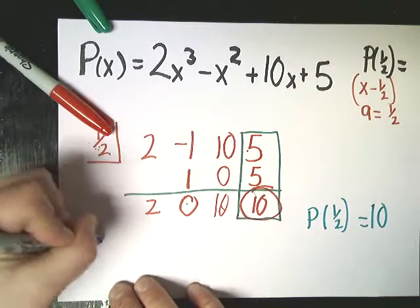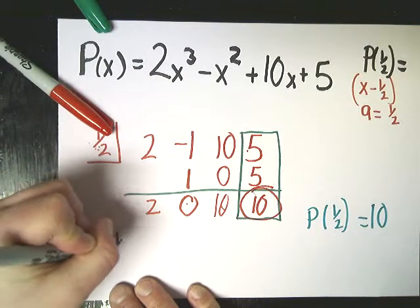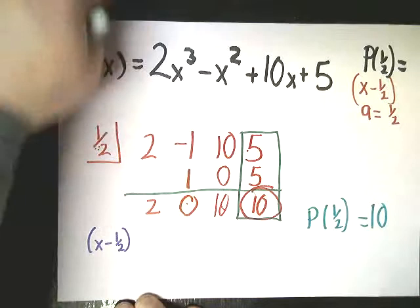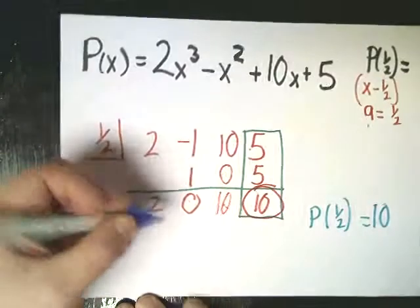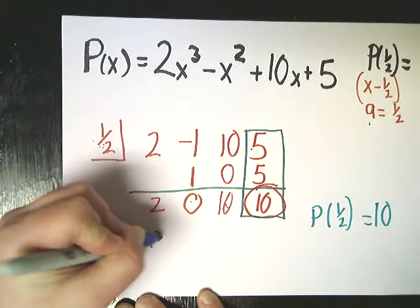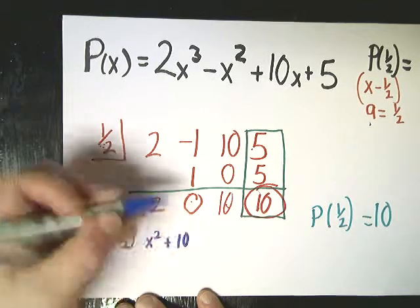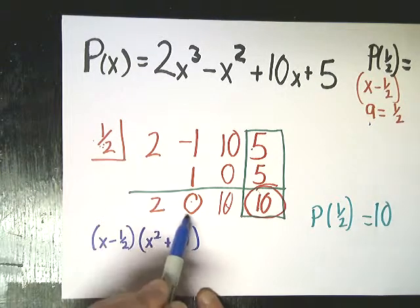Well, that's not too hard. You just take x minus one half. Remember, if you just have it in this form, you have to change the sign to check. And then you'll end up with x squared plus ten. Because there's no x term, this is a zero.